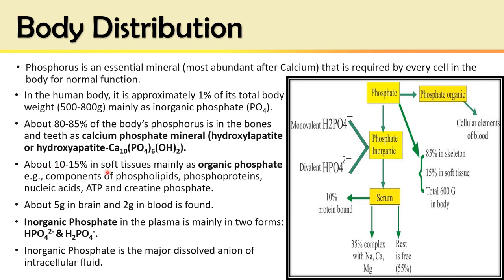About 10–15% of phosphorus is present in soft tissues, mainly as organic phosphate, as components of phospholipids, phosphoproteins, nucleic acids, ATP, creatine phosphate, and phosphate esters of monosaccharides. About 5 grams is present in the brain and 2 grams in blood. Around 1% of total body phosphorus is present in plasma as inorganic phosphate, existing in two forms: monohydrogen phosphate and dihydrogen phosphate. Inorganic phosphate is also the major dissolved anion of intracellular fluid.